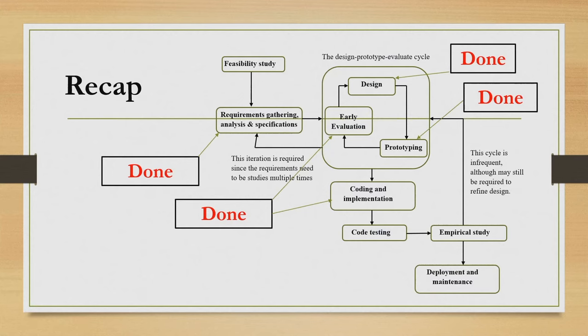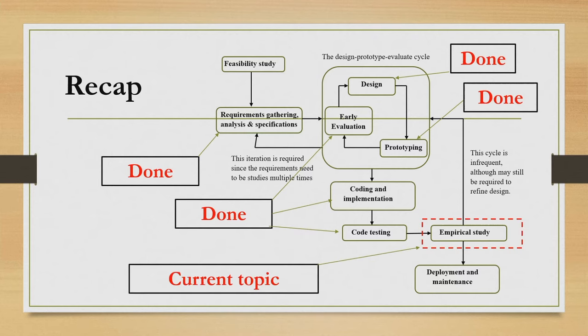Once the code is designed, we go for coding and implementation, whose outcome is the code of the system. This is followed by code testing where we test for bugs, producing a test report. The next stage is empirical study, where we study the usability of the end product. Currently, we are discussing this empirical study stage.